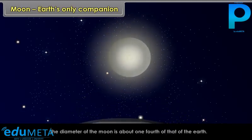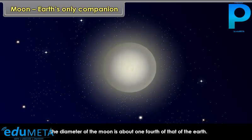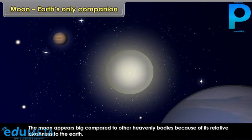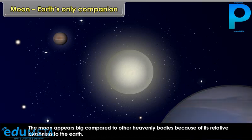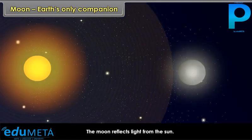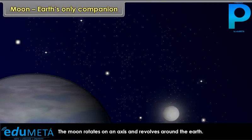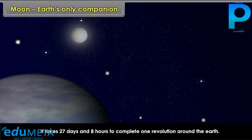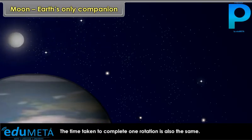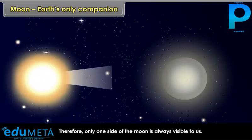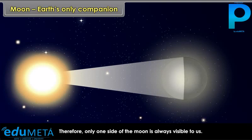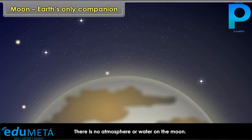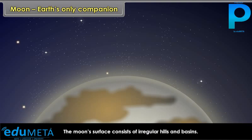Moon is the only satellite of the Earth. The diameter of the Moon is about one-fourth of that of the Earth. The Moon appears big compared to other heavenly bodies because of its relative closeness to the Earth. The Moon reflects light from the Sun. It rotates on an axis and revolves around the Earth. It takes 27 days and 8 hours to complete one revolution around the Earth, and the time taken to complete one rotation is also the same. Therefore, only one side of the Moon is always visible to us. There is no atmosphere or water on the Moon. The Moon's surface consists of irregular hills and basins, and there is no soil either.